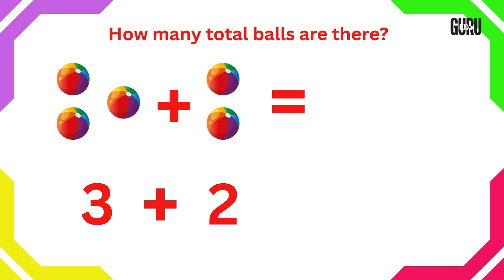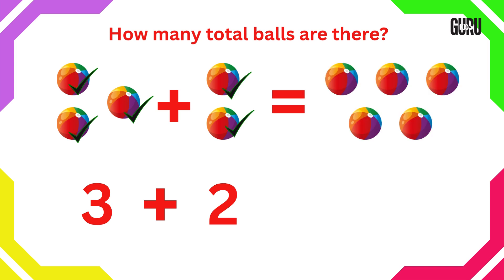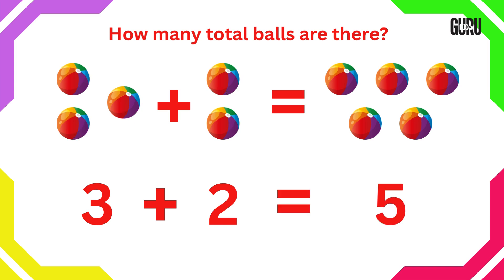Now let's count all together. Count after 3: 4, 5. So total 5 balls. Therefore, 3 add 2 is 5.